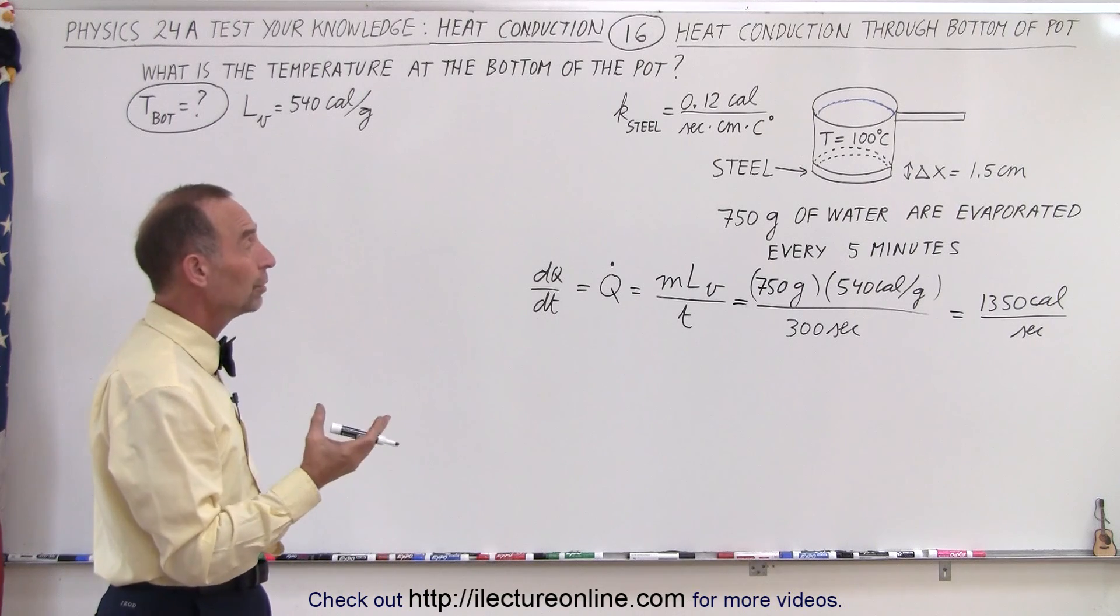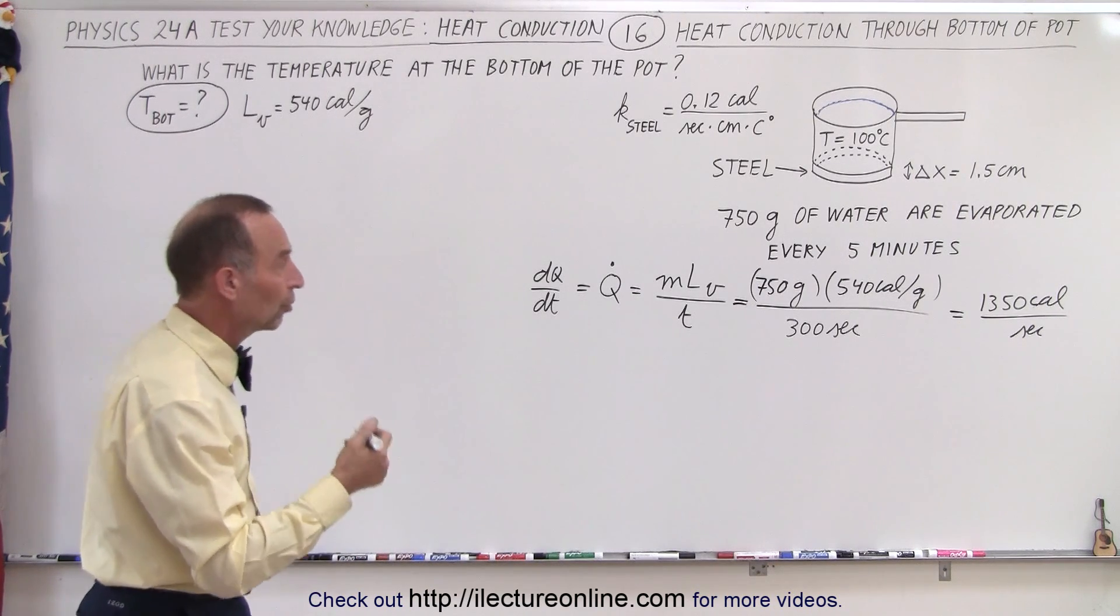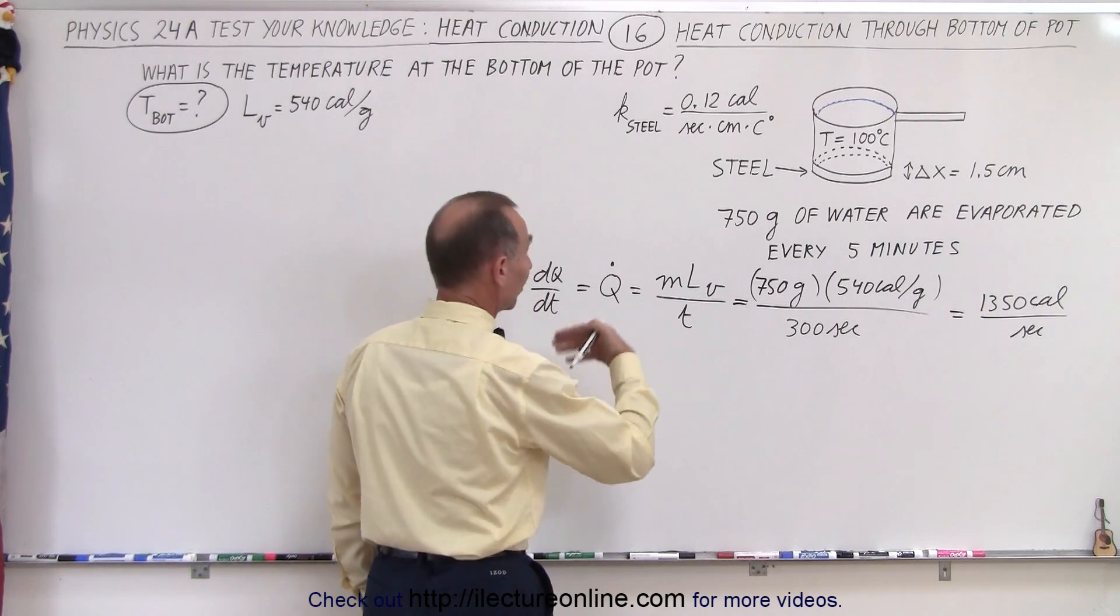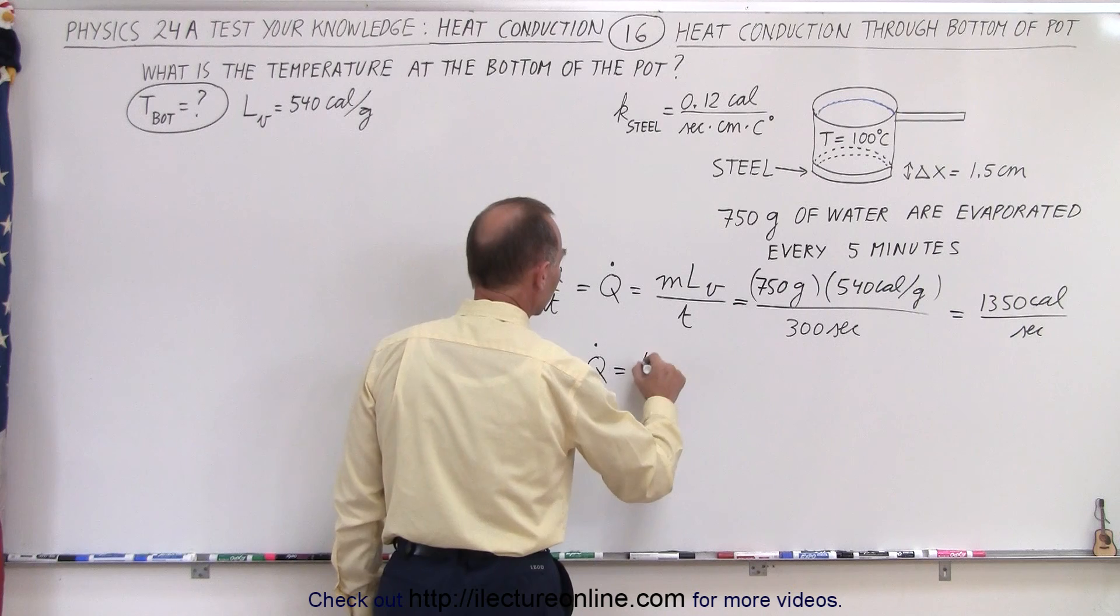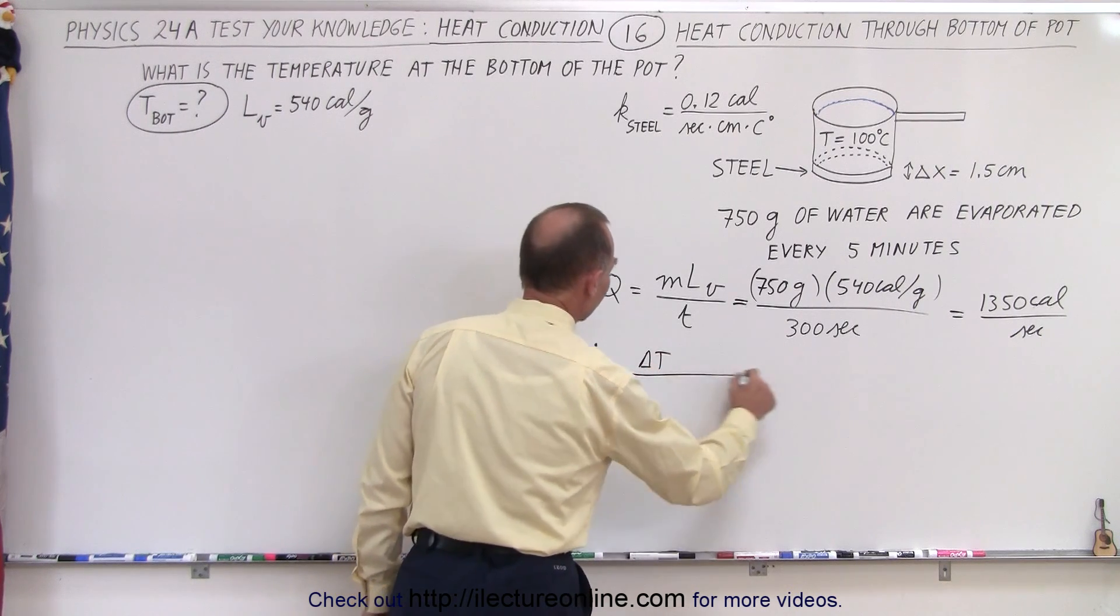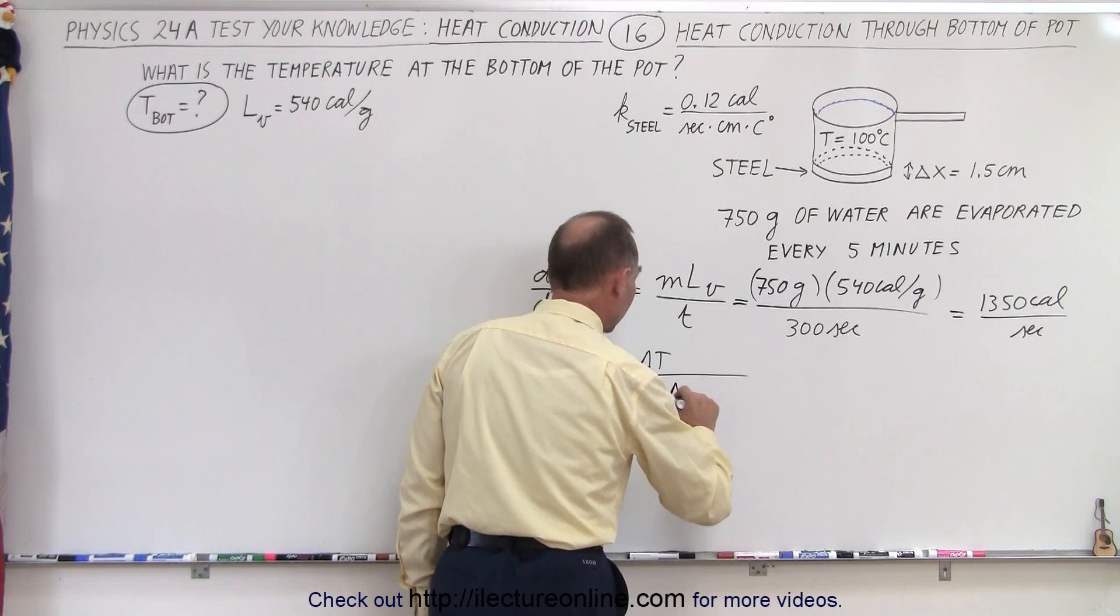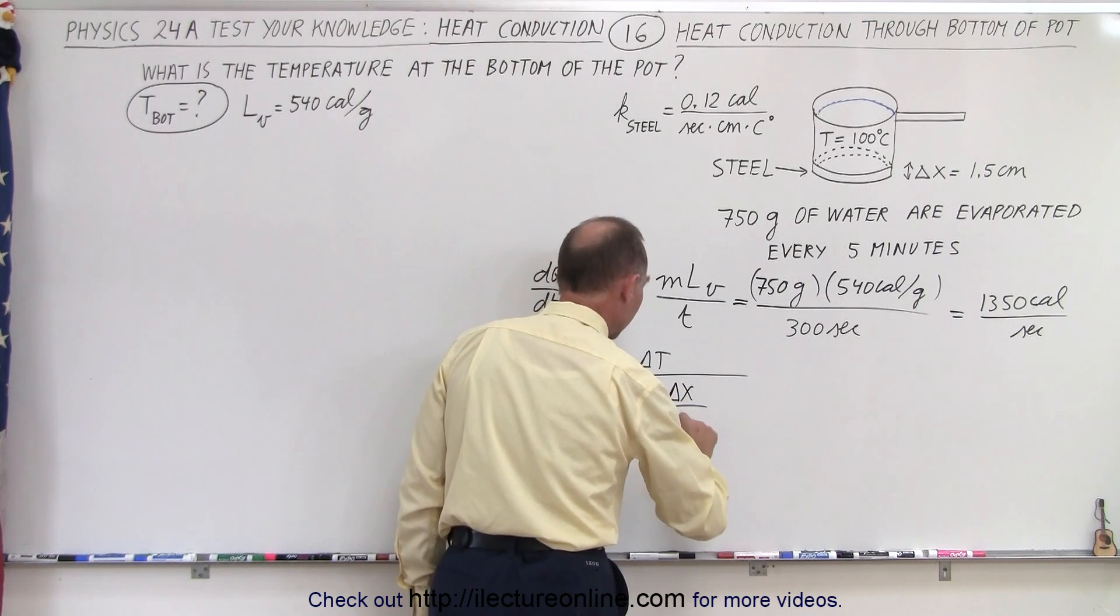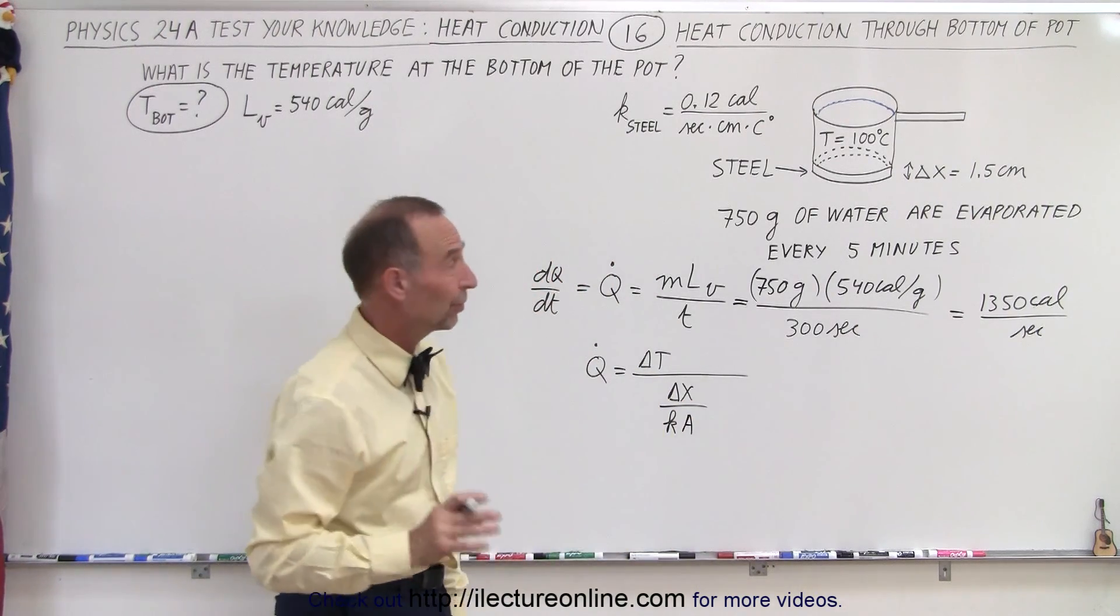now we can put that into the equation that determines the heat flow through a substance, the heat conductivity through a substance. So if Q dot is equal to the change in the temperature divided by, in this case, that will be delta x divided by the heat conductivity times the cross-sectional area. One more thing is missing.